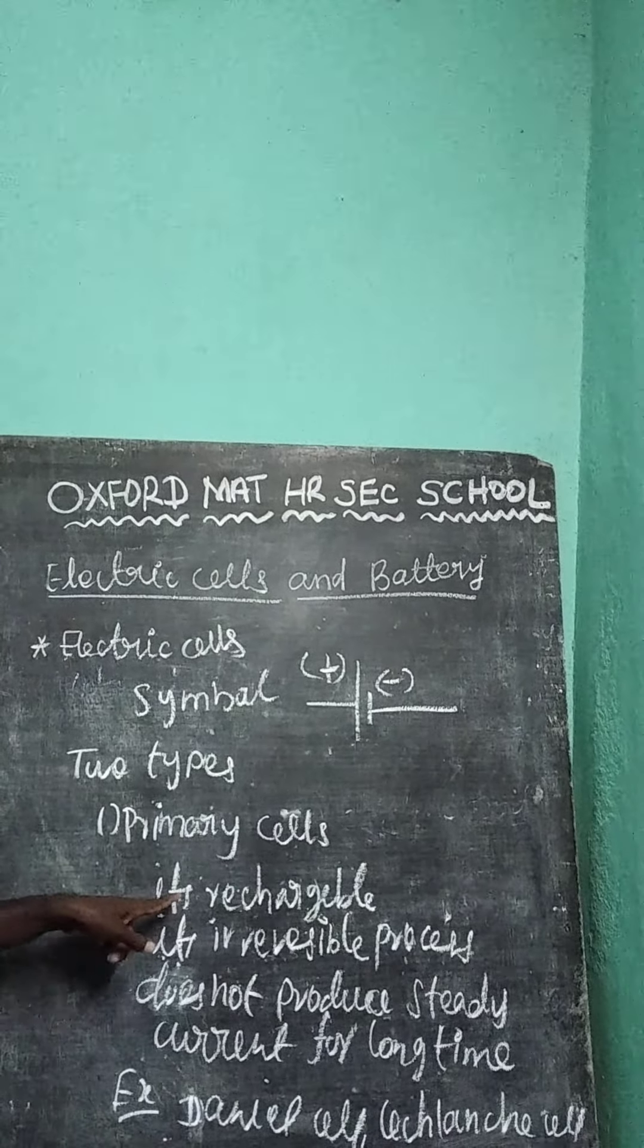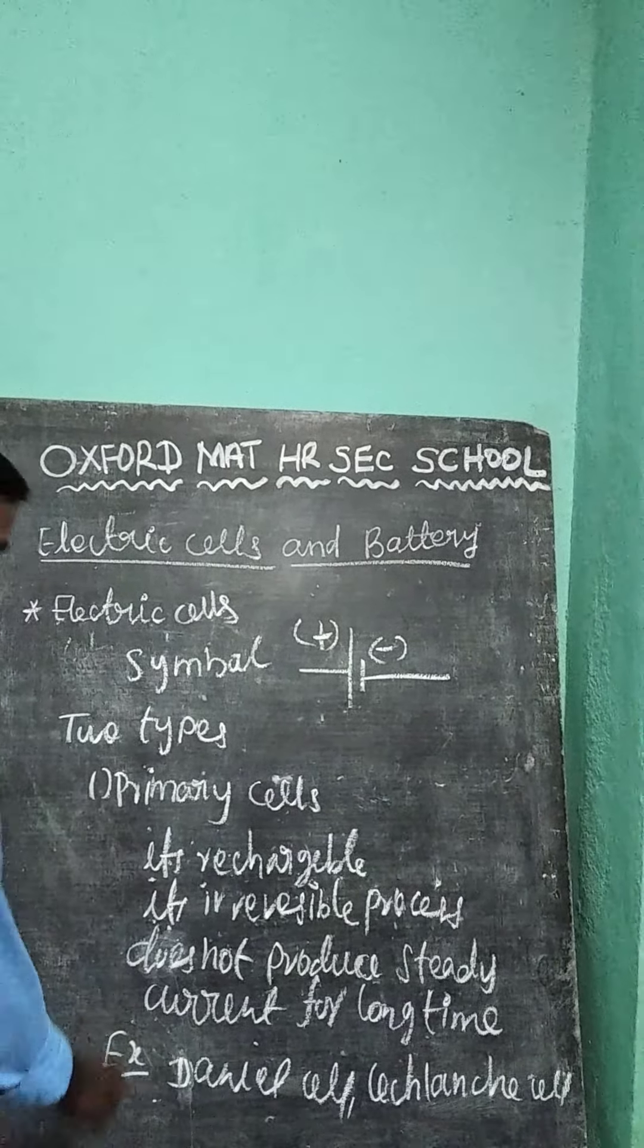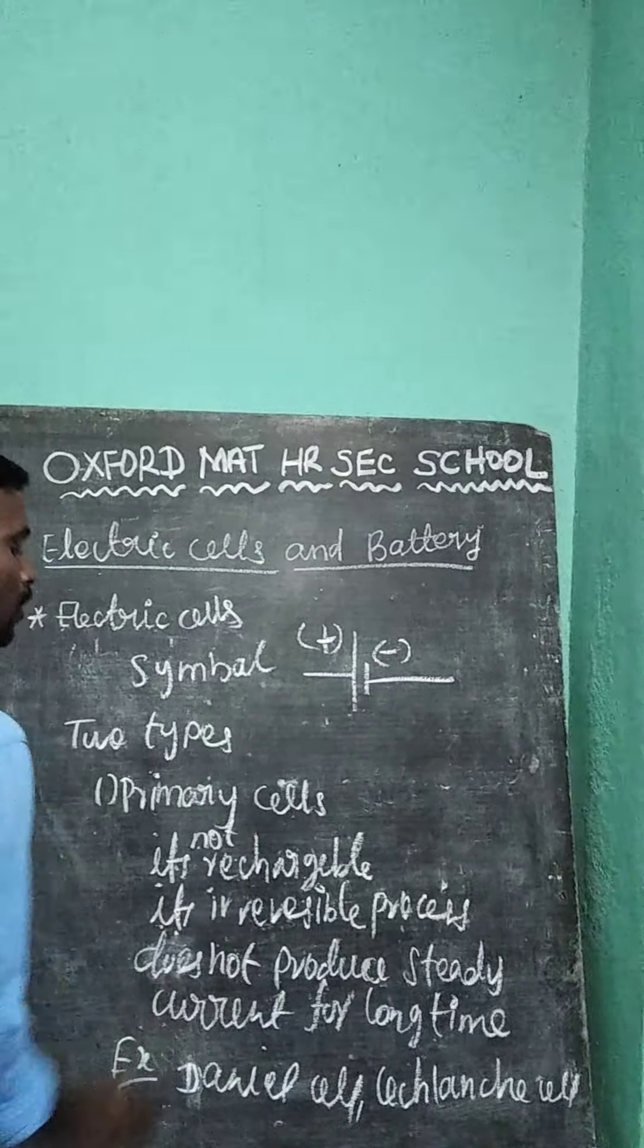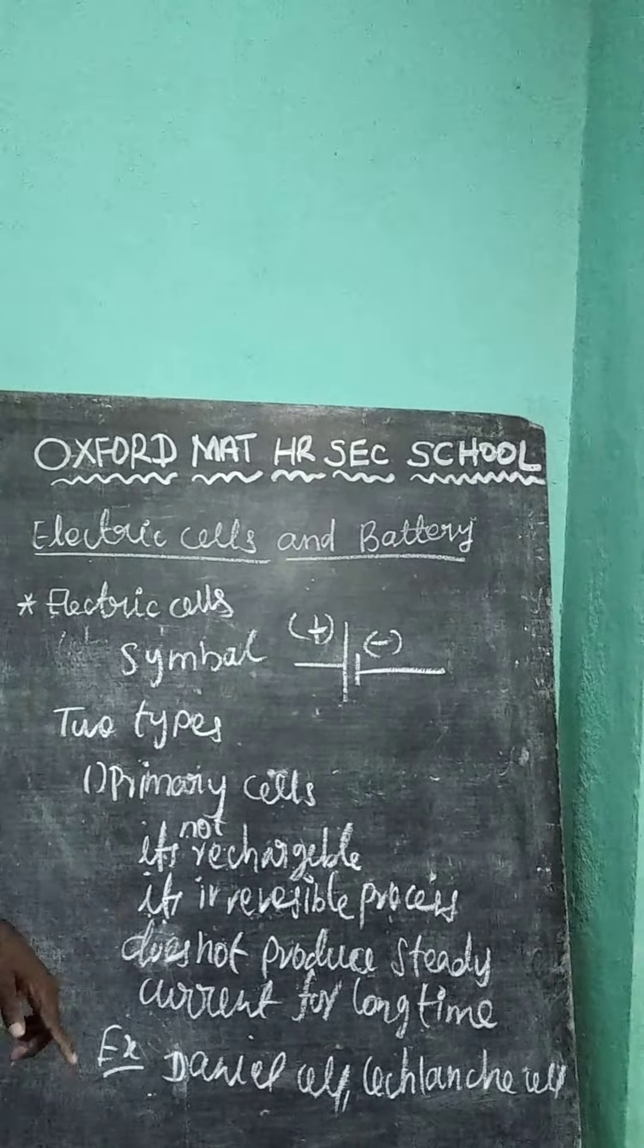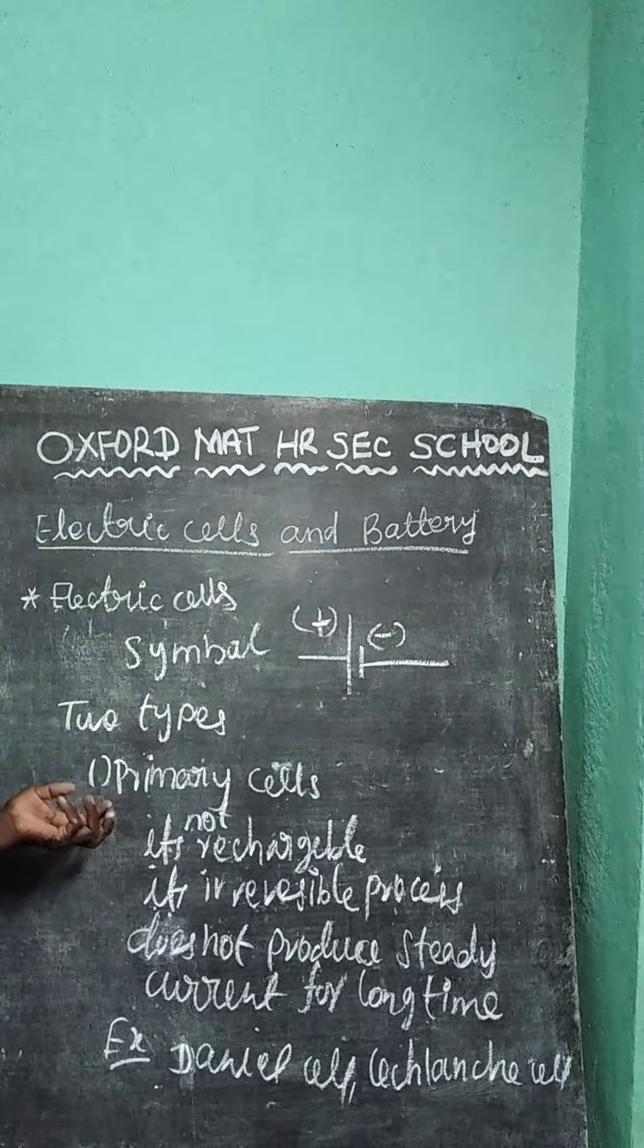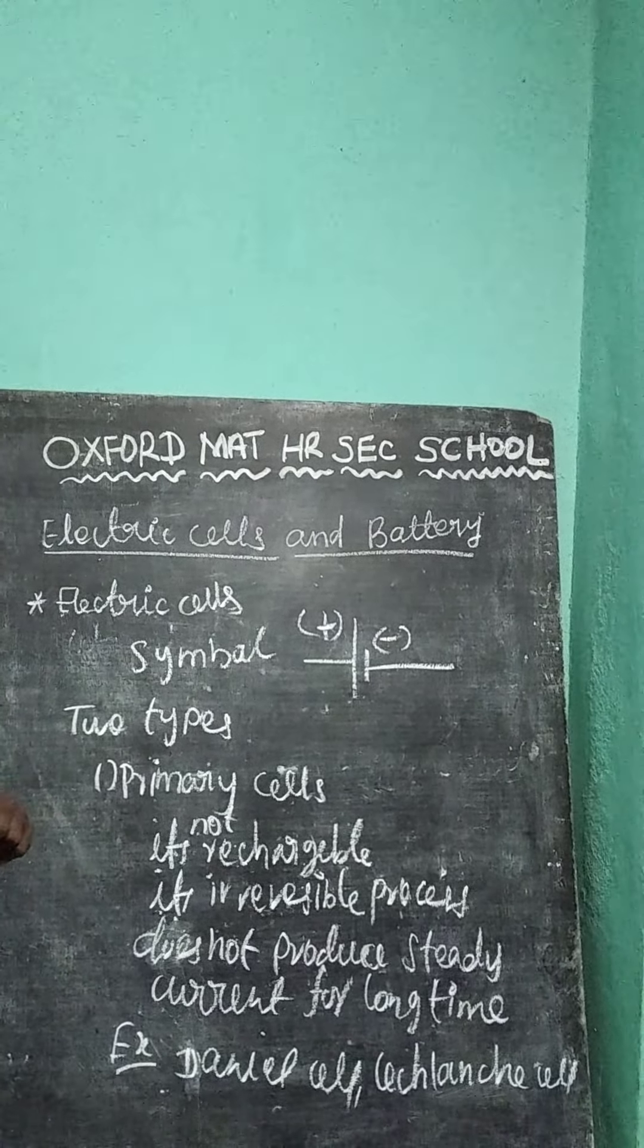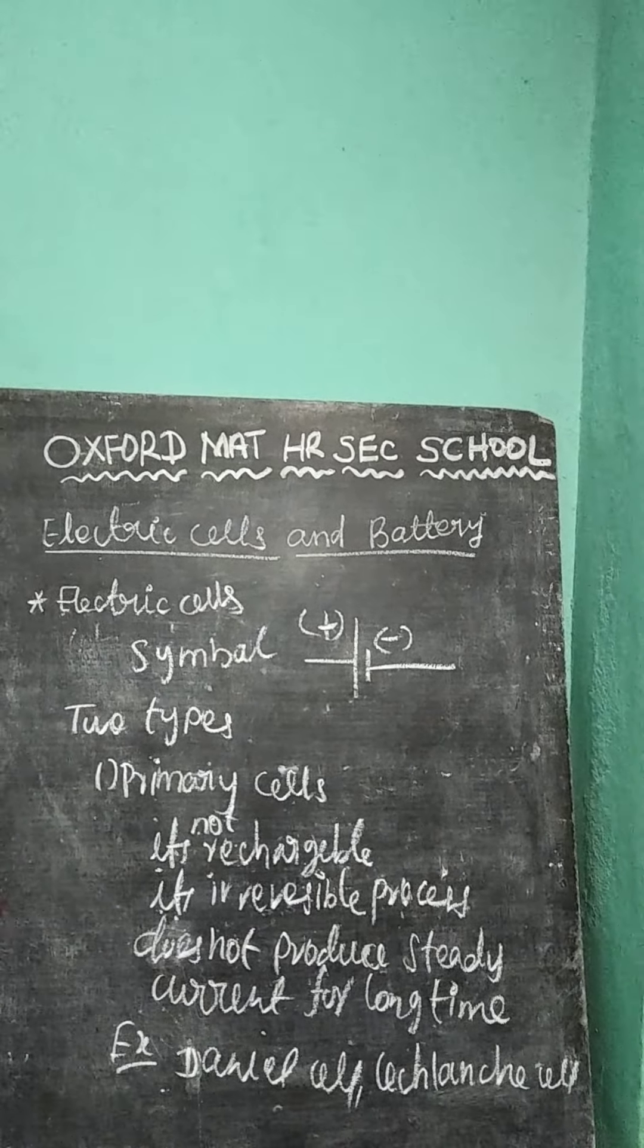Primary cell, it is not rechargeable. It is irreversible process. Not rechargeable means only one time use. For example, in our house we are using battery cell, remote cell, then wall clock cell. That's only one time we can use. Again, we throw it outside.